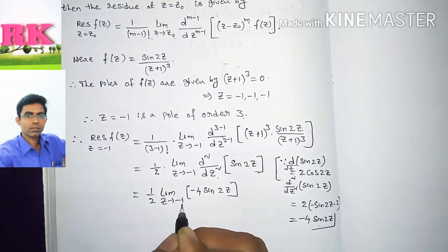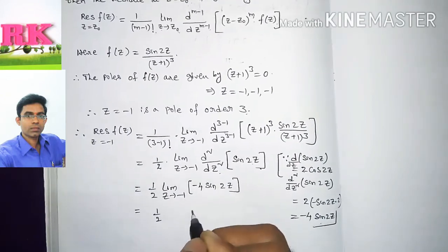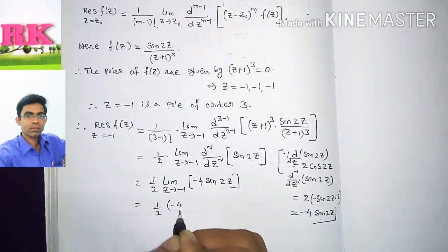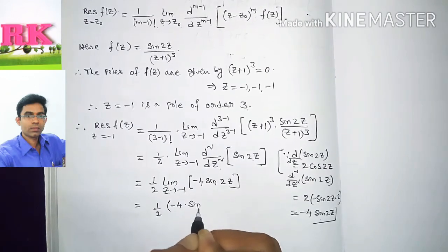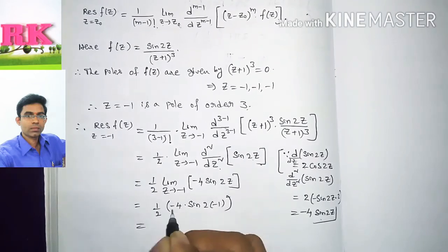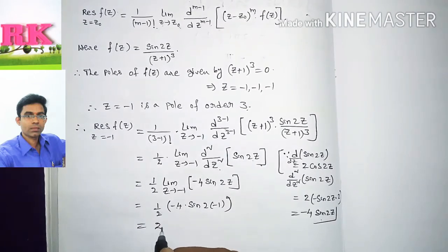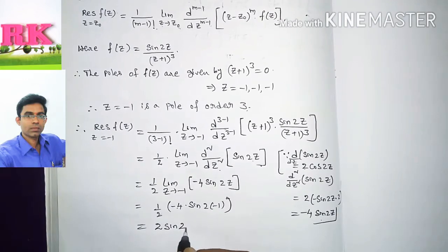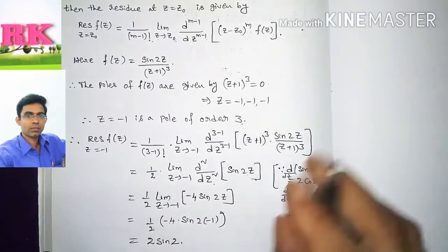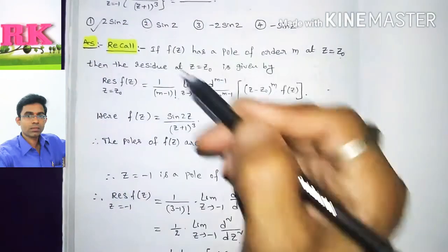Substituting Z = −1, we get (1/2) × (−4) × sin(2 × (−1)) = (1/2) × (−4) × sin(−2). Since sin(−2) = −sin(2), this simplifies to (1/2) × (−4) × (−sin2) = 2sin2. So the answer is 2sin2, which means option number 1 is correct.